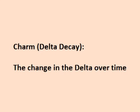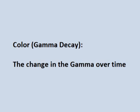The change in delta over time is known as charm or delta decay. Gamma also changes over time as the option moves closer to expiration. The change in gamma over time is known as color or gamma decay. When an option nears expiration, color may change quickly.